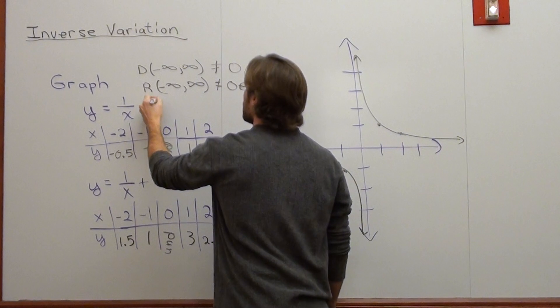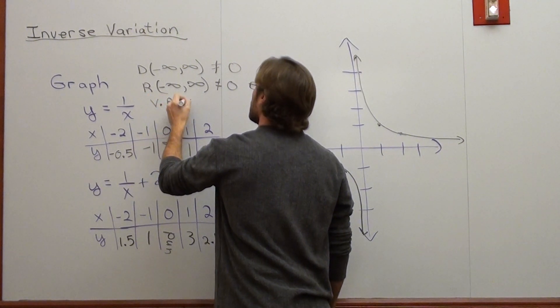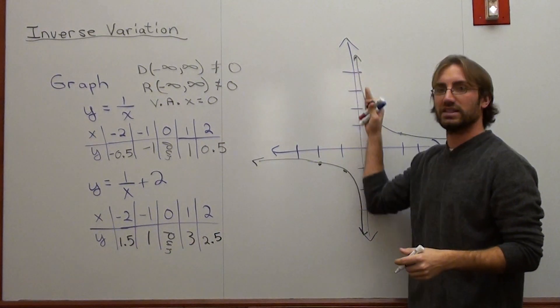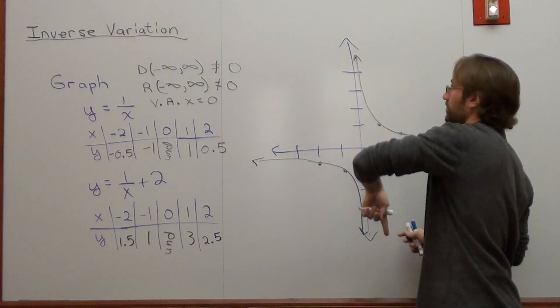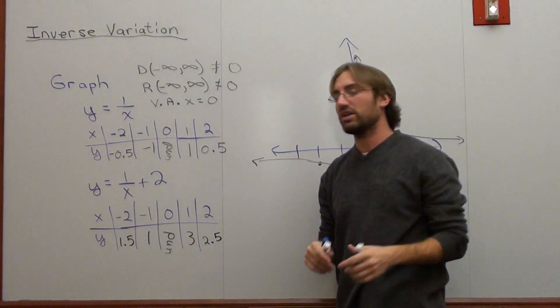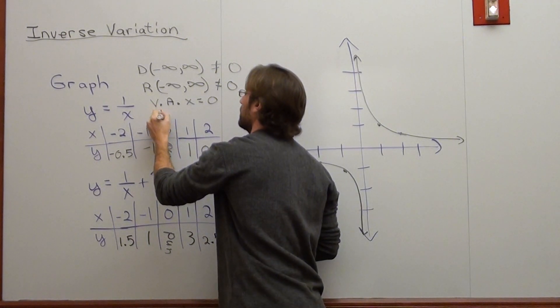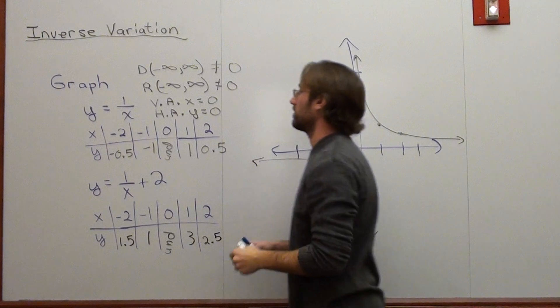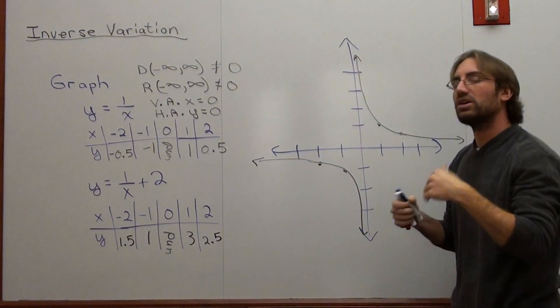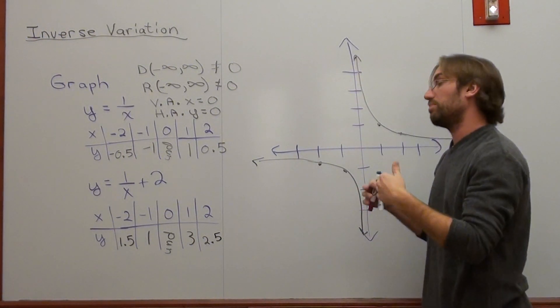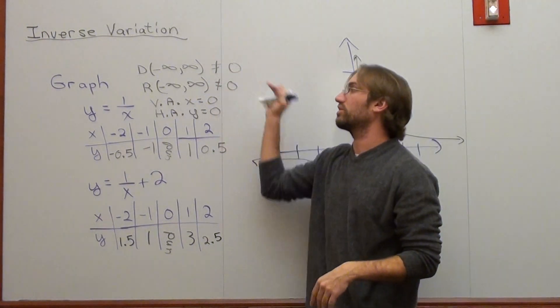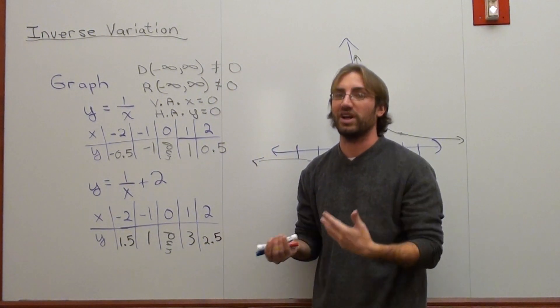It goes from negative infinity to infinity for the range, the y values, except it does not include the value 0. Vertical asymptote is at x equals 0. It's horizontal asymptote is y equals 0. So horizontal and vertical asymptote are basically the points it doesn't touch on the graph, which are the points that are excluded from its domain and range. That's a cool way of thinking about it.